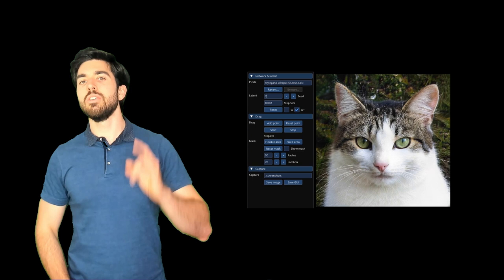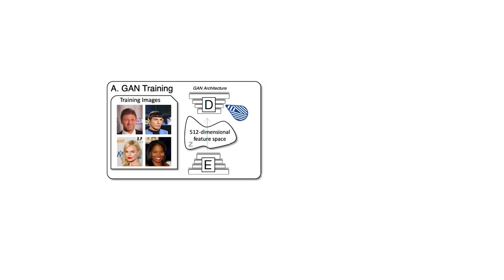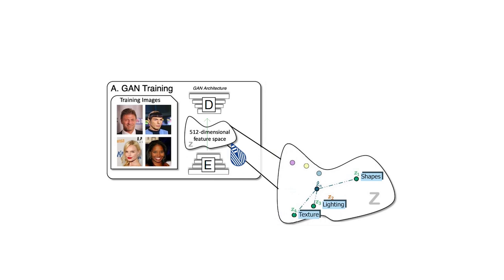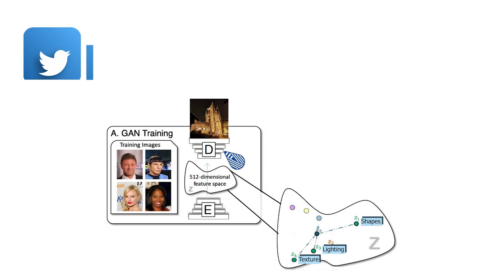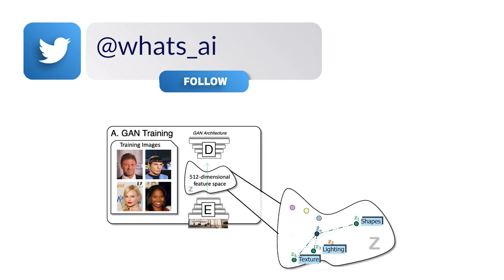What's even cooler than the results we've been seeing is how Drag GAN works. To start, I will need you to have somewhat of a basic understanding of GANs. This kind of architecture is a way to train a generative model where you will train a model called your generator to create new images following a specific dataset, so basically imitating the images that you already have.